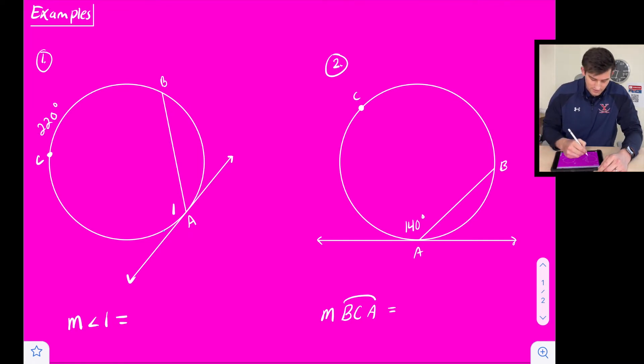Number one we want to find the measure of angle one. So we are given the measure of the major arc it is 210 degrees. So all we have to do is take half of that to find the measure of angle one. So half of 220 would be 110 degrees.